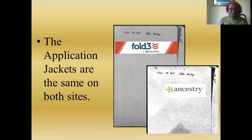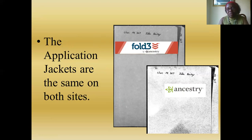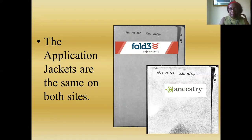The application jackets are in black and white on both sites. On Fold3, images are taken from microfilm and digitized. Ancestry actually went to Fort Worth, where the original records are kept, and digitized them directly. The application jackets are still black and white images, which is understandable since the content is typewritten text on white paper. They are basically the same on both sites.